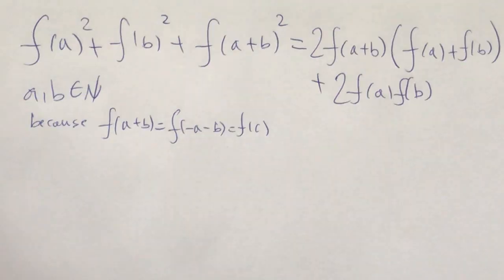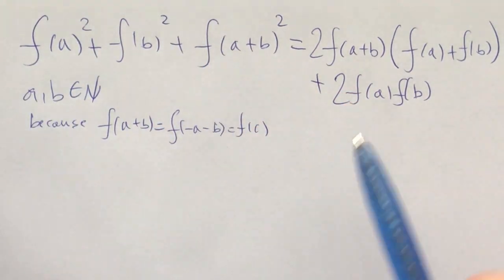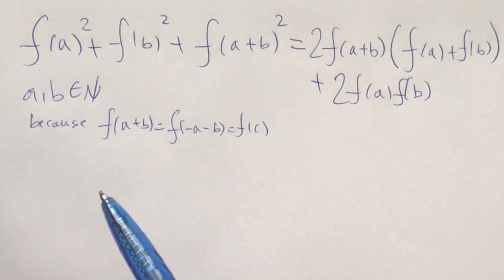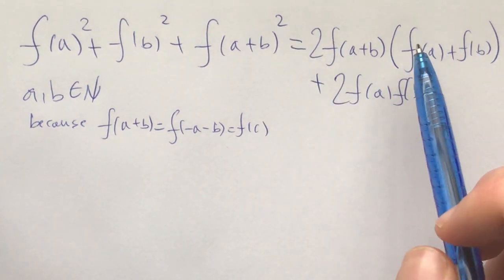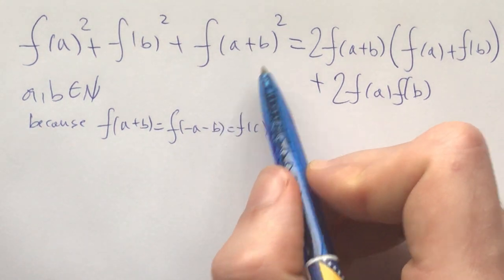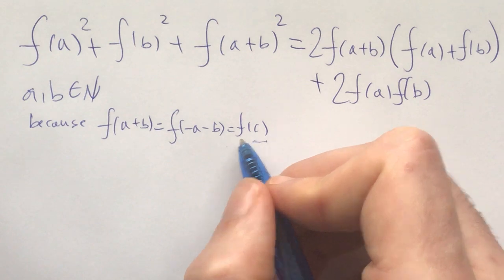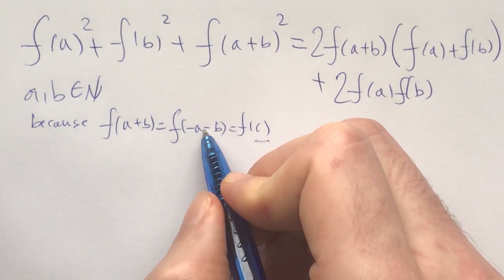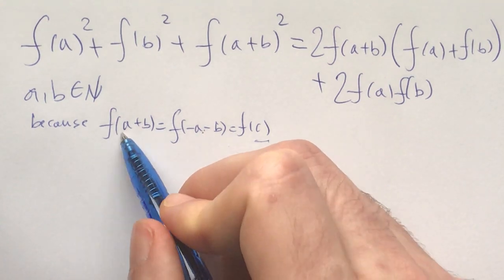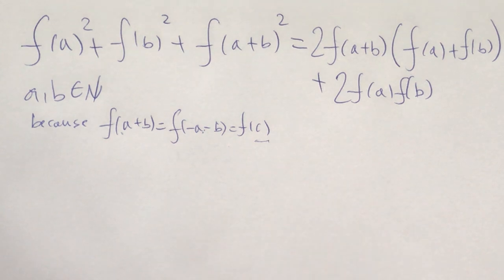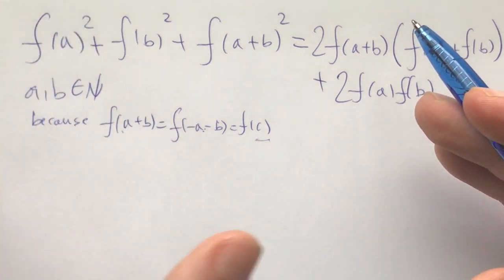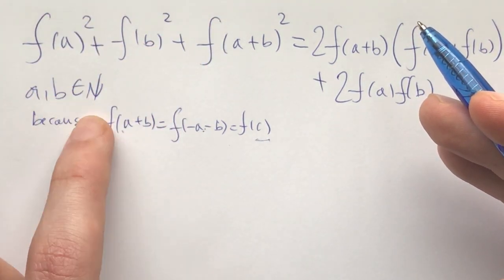Now let's do that. We can get rid of c and we're left with f(a)² + f(b)² + f(a+b)² = this simplified form. This holds because f(c) = f(−a−b) = f(a+b) by our condition and by f(x) = f(−x). The reason we can focus on positive integers is that the negatives follow immediately, and now we've narrowed down our focus considerably.